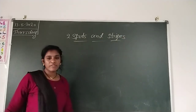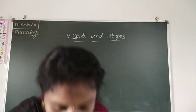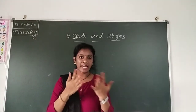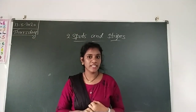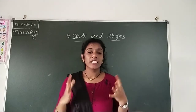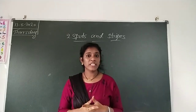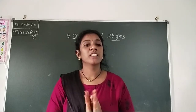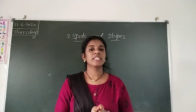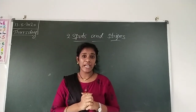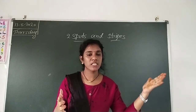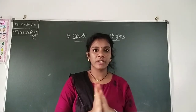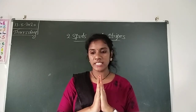In the last class we discussed about different types of appearance of animals. Some animals have shells, some have scales, and some have feathers. So today we are discussing about movement — how animals move from one place to another, and the different types of movement they use.